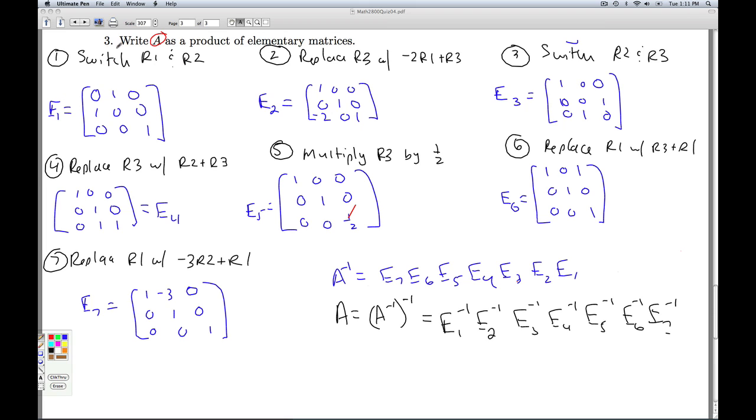I'd have to do the inverse of switching row 1 and row 2. So if I switch row 1 and row 2, how do I get back to the original matrix? I switch them again. So E1 inverse is actually the same matrix as E1.